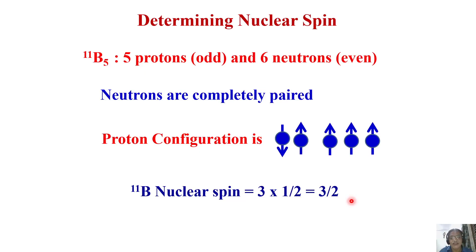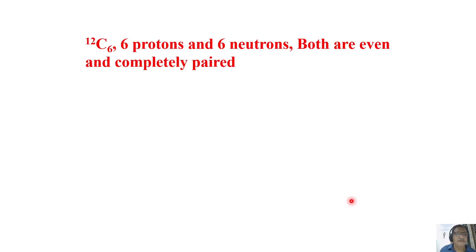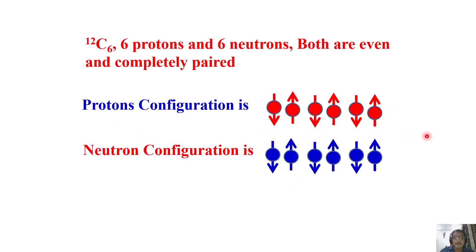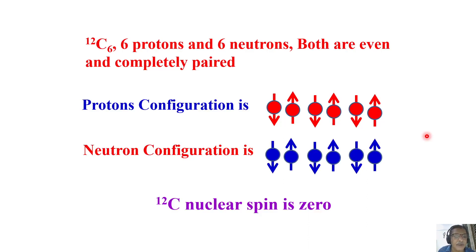Boron-10 has spin 3, Boron-11 has spin 3/2 - which you could also get from the empirical table. Now Carbon-12: we always say its spin is zero. Both atomic mass and atomic number are even. Carbon-12 has six protons and six neutrons which are completely paired. There is no unpaired proton and no unpaired neutron in the configuration; all protons and neutrons are completely paired. So the total spin of Carbon-12 is zero.